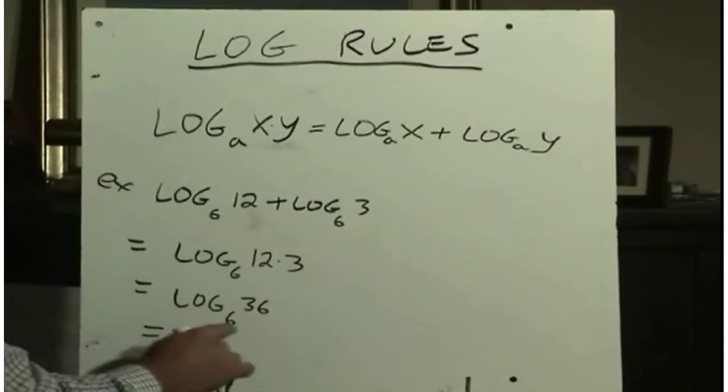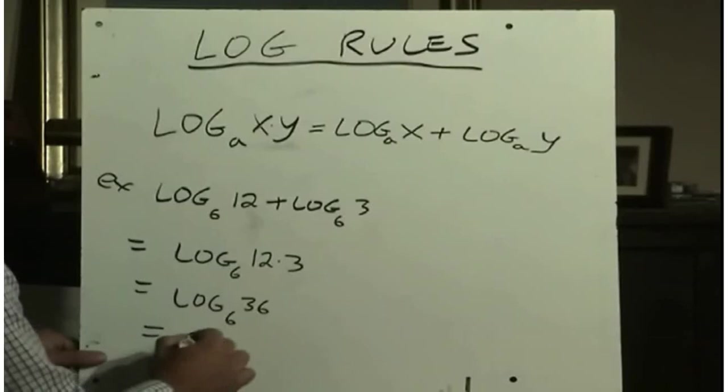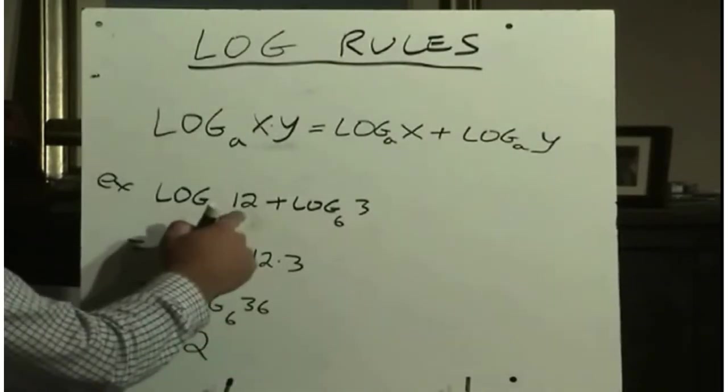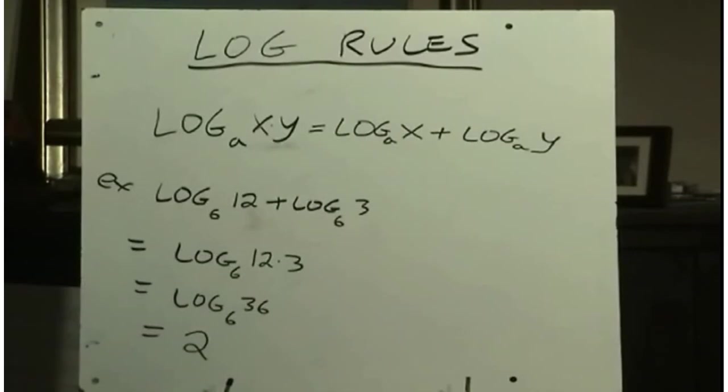And of course, this is asking what exponent on 6 is going to give me 36. Well, that would be 2. So log base 6 of 12 plus log base 6 of 3 is 2.